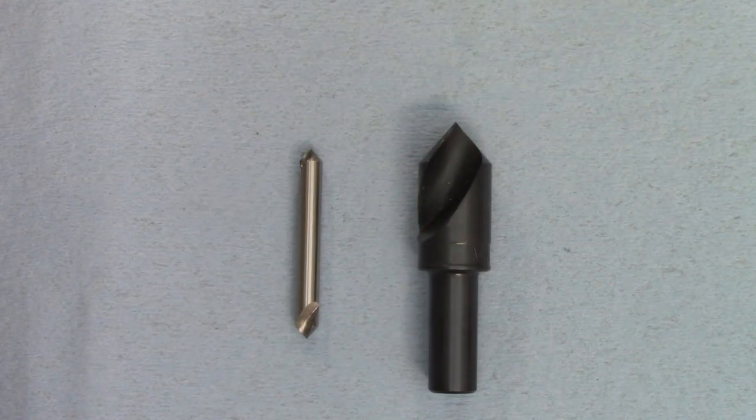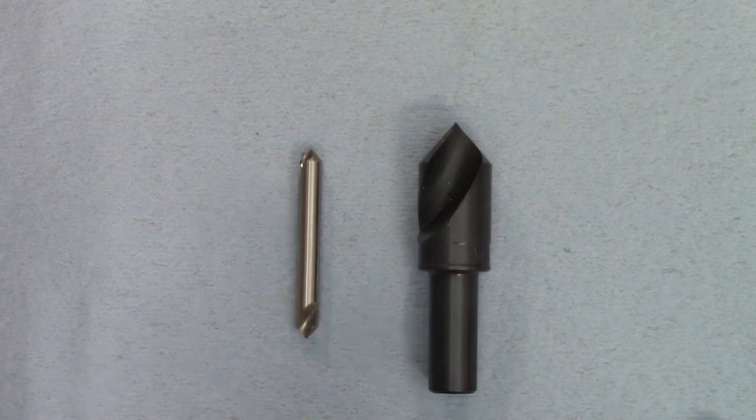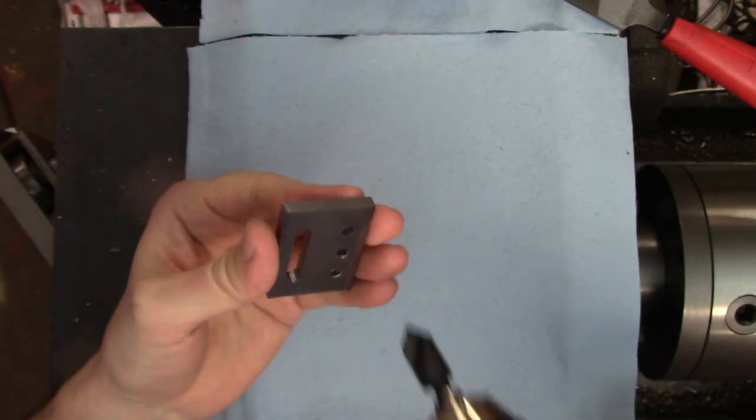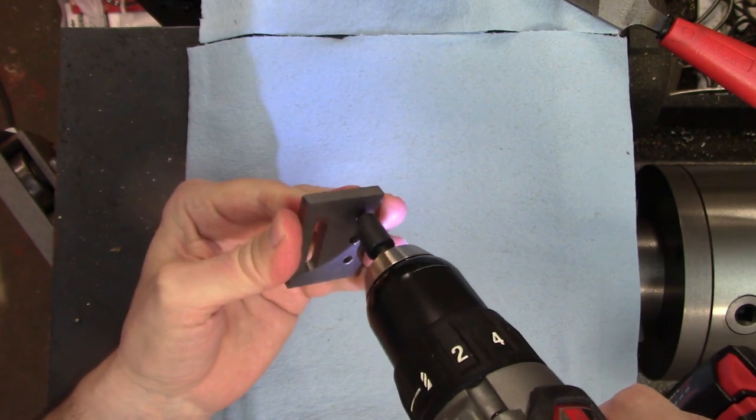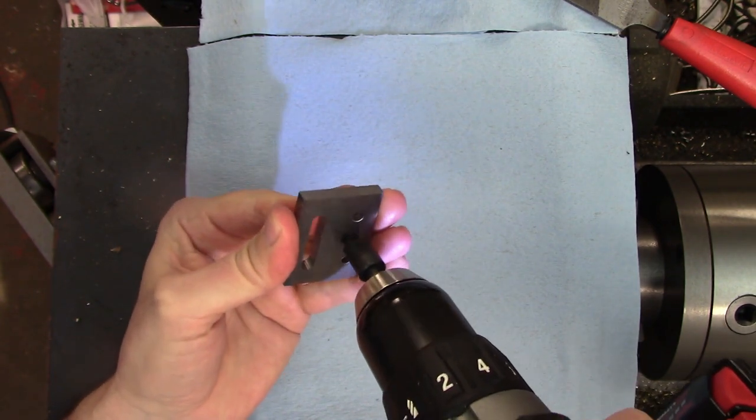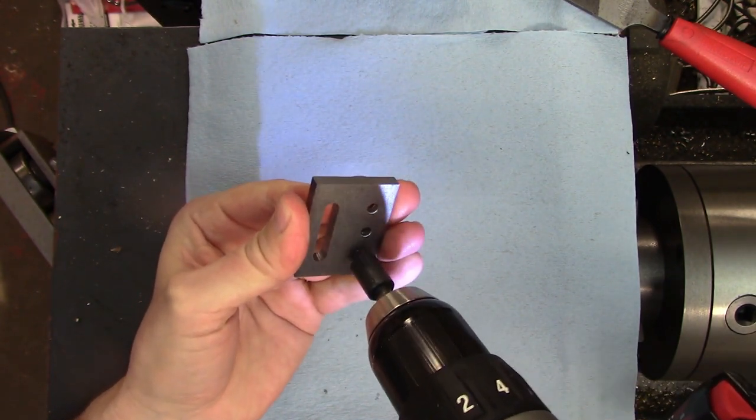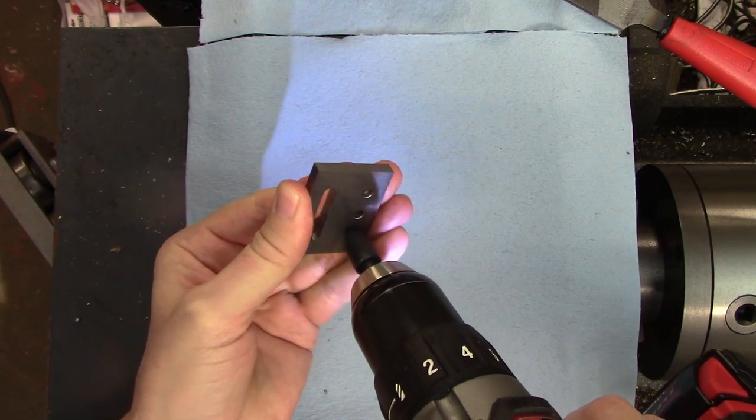I use countersinks to knock the burrs off of holes and I keep several sizes around for my various needs. When I'm working on big jobs with lots of holes, I keep a countersink and a cordless drill. This makes breaking all of those edges a simple job.